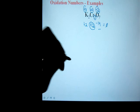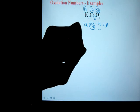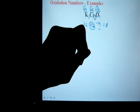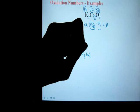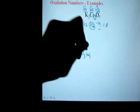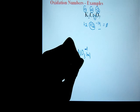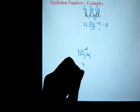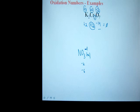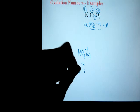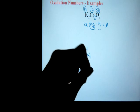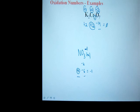Another example — the nitrate ion. The total charge on that polyatomic ion is negative one. I know that oxygen is negative two and there are three of them for minus six. So what does that make the nitrogen? Nitrogen must be plus five. Plus five minus six equals negative one. That's how they work. Some examples are smaller than others, but the rules are all the same.